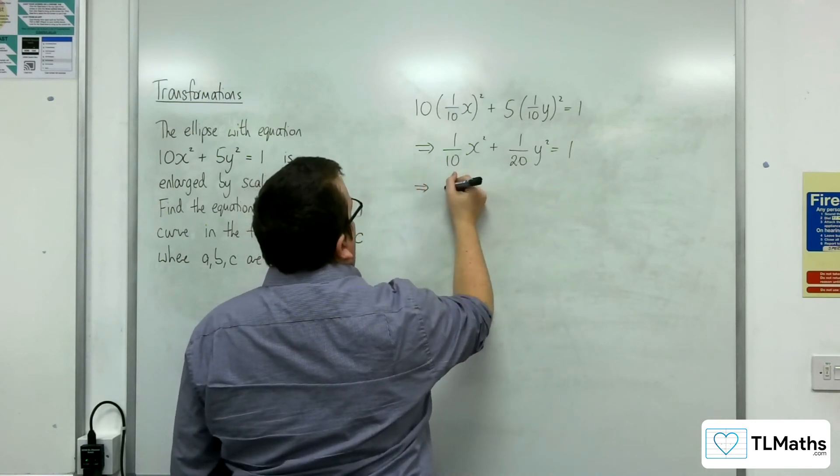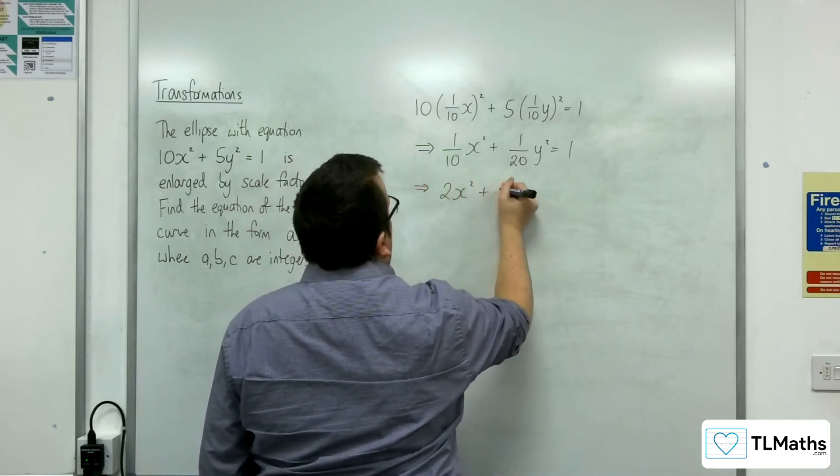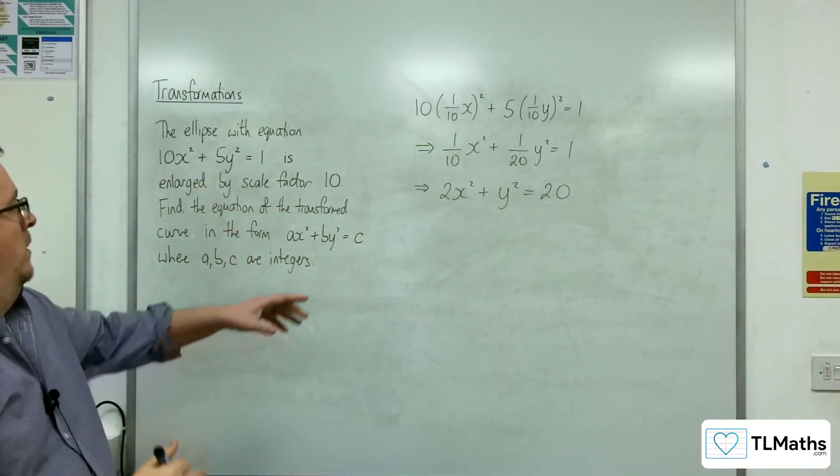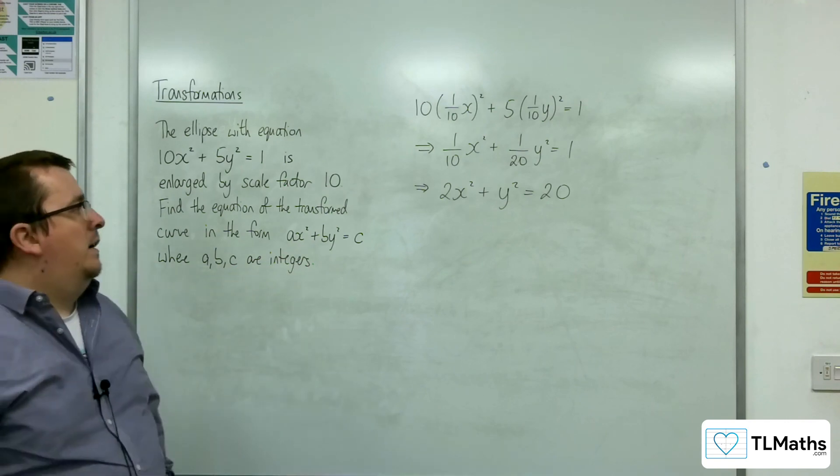Multiply it by the 20 and we get 2x squared plus y squared equals 20. And that is in the form that we want where the a, b, c are integers.